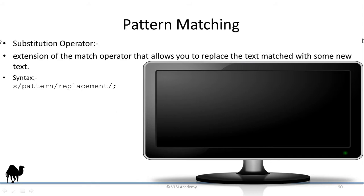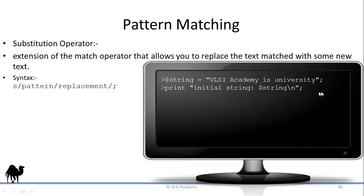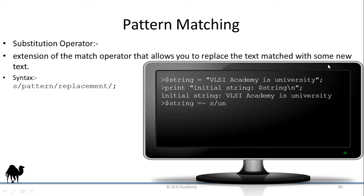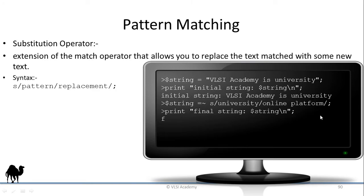Let's look at an example. Assume we have a string with value 'VLSI Academy is university'. First print the initial string for the record — the output will be 'VLSI Academy is university'. The requirement is to replace the substring 'university' with 'online platform'. To do that, after S you specify the pattern 'university' and the replacement 'online platform': s/university/online platform/. It will replace 'university' with 'online platform', so when we print the final string it will be 'VLSI Academy is online platform'.